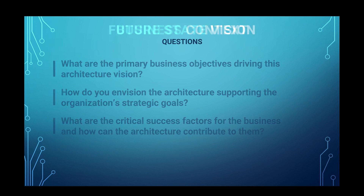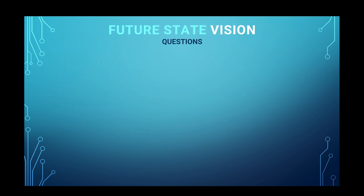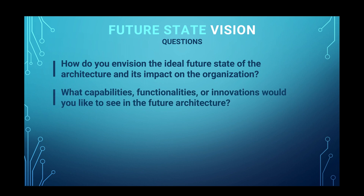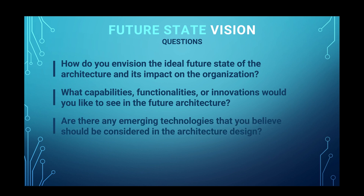From a future state vision perspective: How do you envision the ideal future state of the architecture and its impact on the organization? What capabilities, functionalities, or innovations would you like to see in the future architecture? Are there any emerging technologies or trends that you believe should be considered in the architecture design — for example, things like Kubernetes and self-service portals?